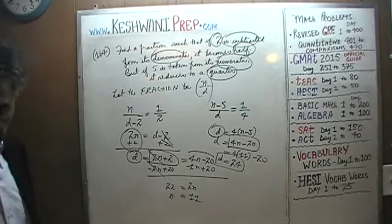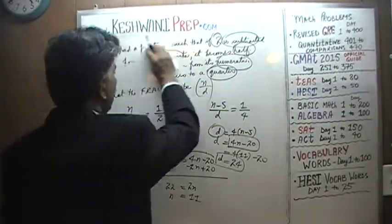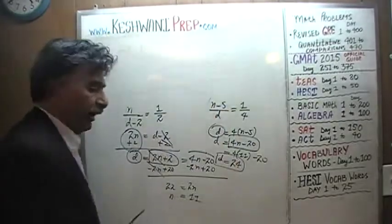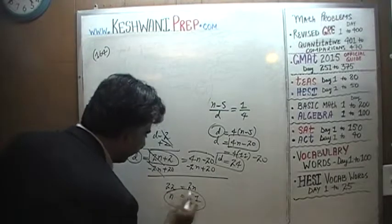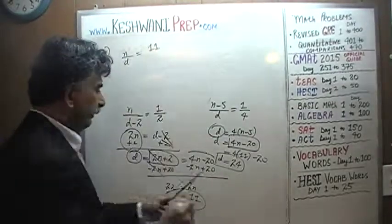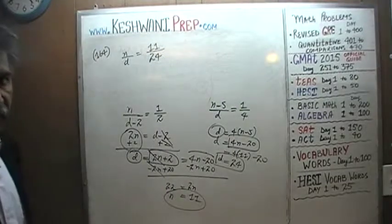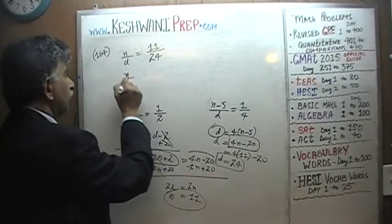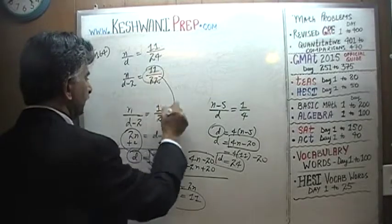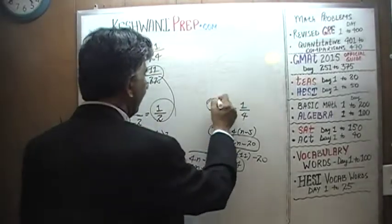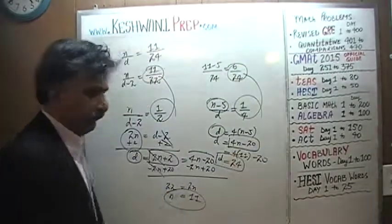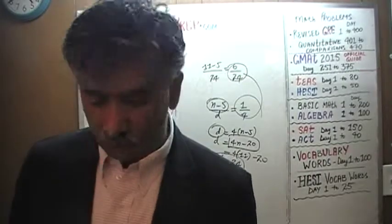Which means the fraction we're looking for — our claim — is 11 over 24. Let's see if it meets the conditions. If you take 2 from the denominator, 11 over (24 minus 2) is 11 over 22, which as you can see becomes half. The second condition: if you subtract 5 from the numerator, 11 minus 5 is 6, so it becomes 6 over 24, and 6 over 24 is a quarter. That confirms our work is correct.